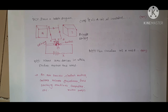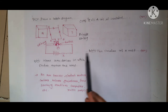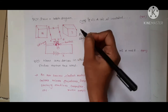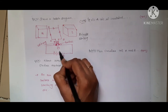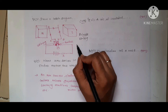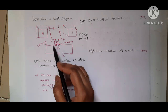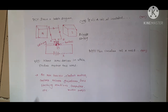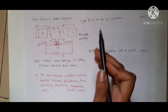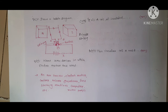Question number 5: draw a labelled diagram of an electric motor, explain its principle, working, and what is the function of the split ring in the electric motor. This is a five-mark question. You need to draw the diagram, explain the principle, explain the working, and fully explain the split ring, which is quite important. For the principle, working, and split ring explanation, please see the last video where I explained it completely.